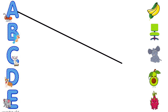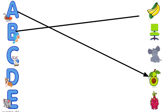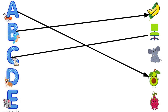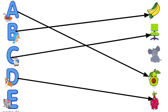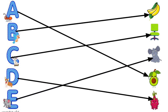A for Avocado, B for Banana, C for Chair, D for Dragon Fruit, E for Elephant.